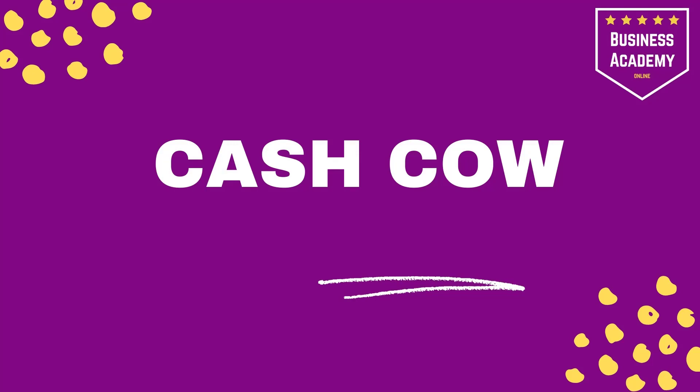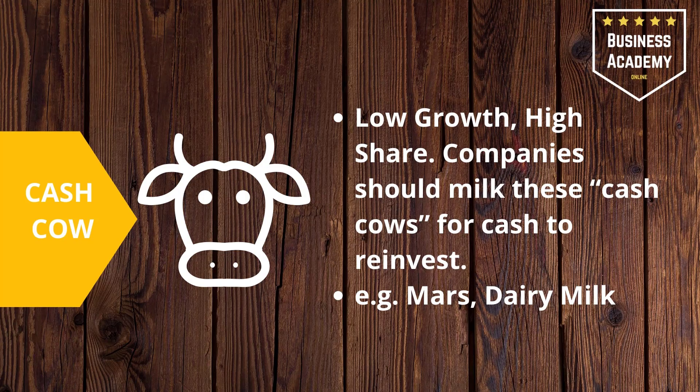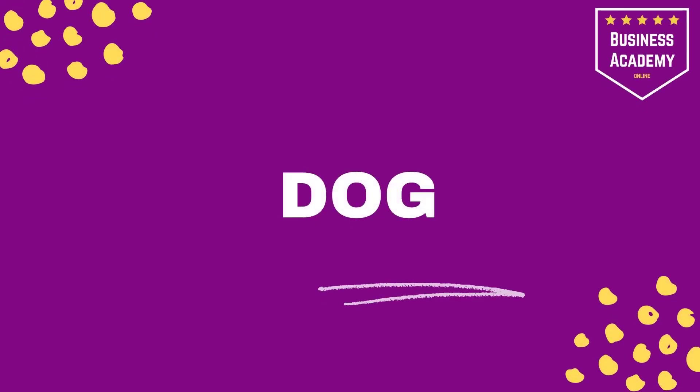The first area we're going to look at is the cash cow. The cash cow in the matrix is low growth, high market share. Essentially, pretty much everyone has bought and used this product, so it's not growing much because it's saturated the market. It's a market leader. Companies should milk these cash cows for cash to reinvest. That's what Mars Bar and Dairy Milk have done — you don't tend to see adverts for these because they don't need to be advertised; people will buy them regardless.